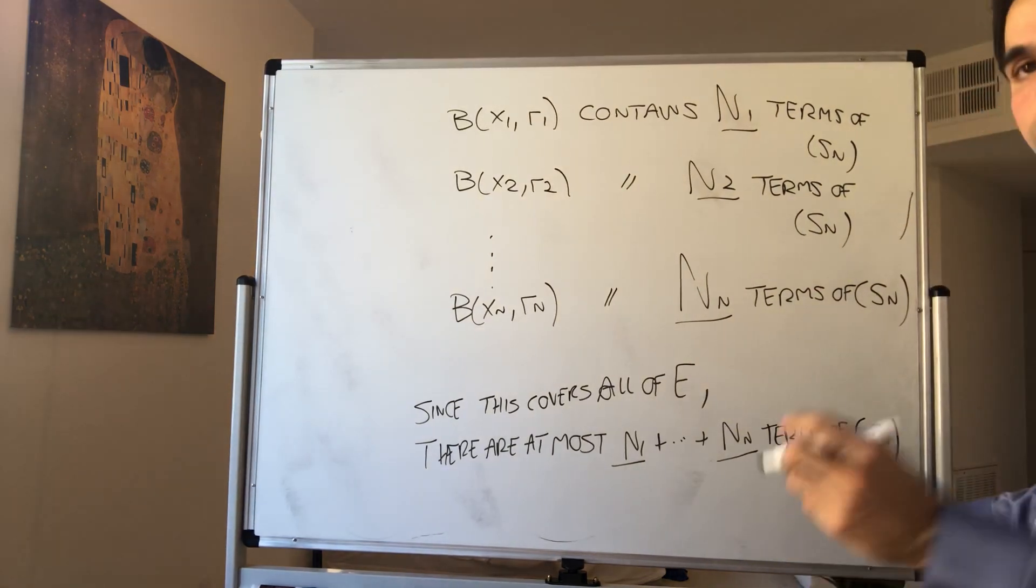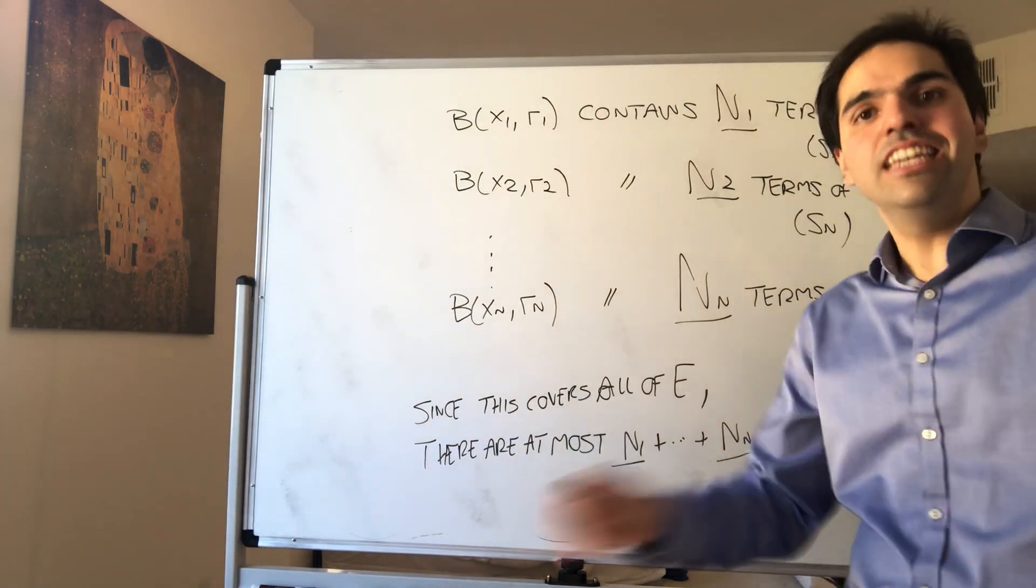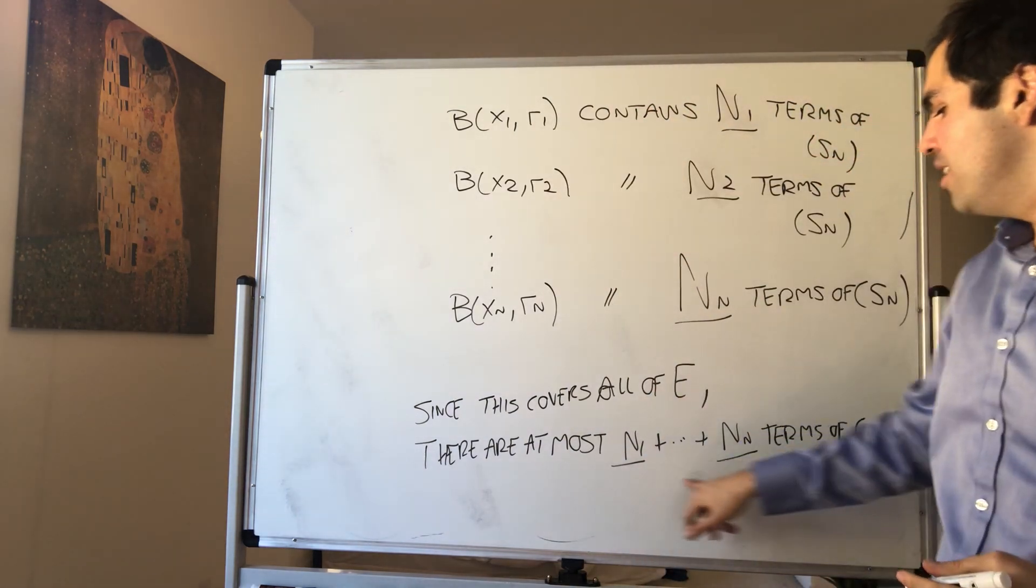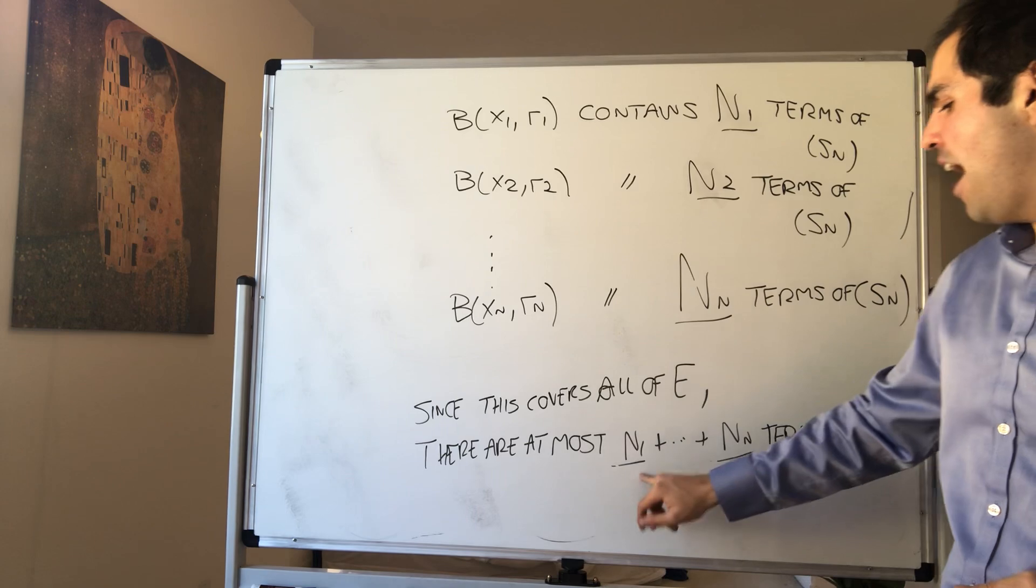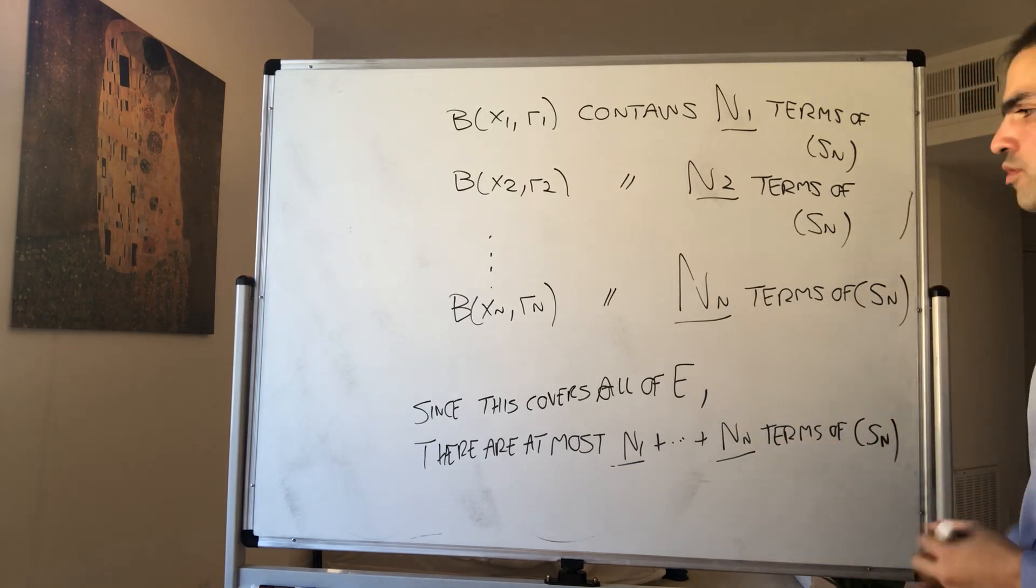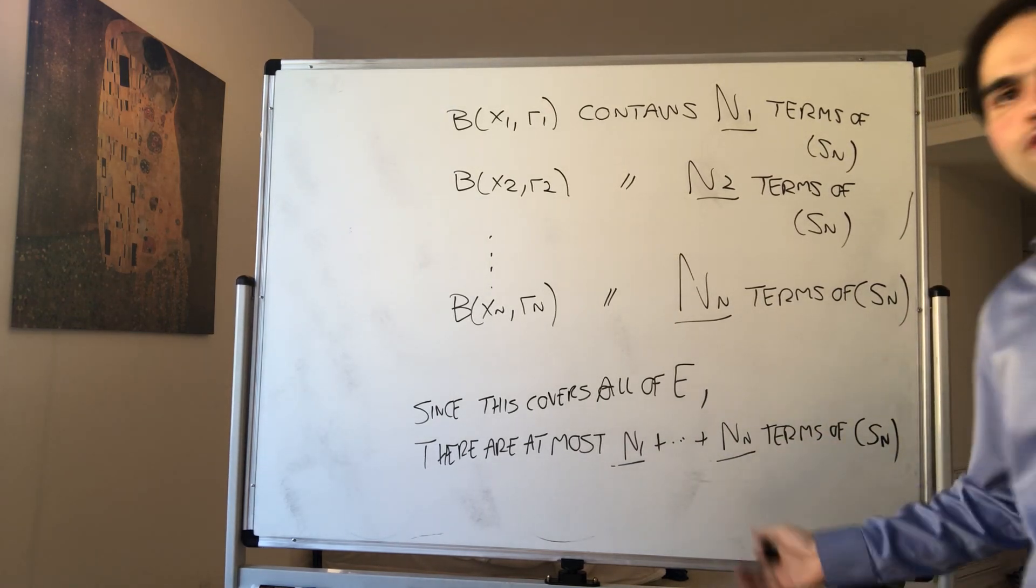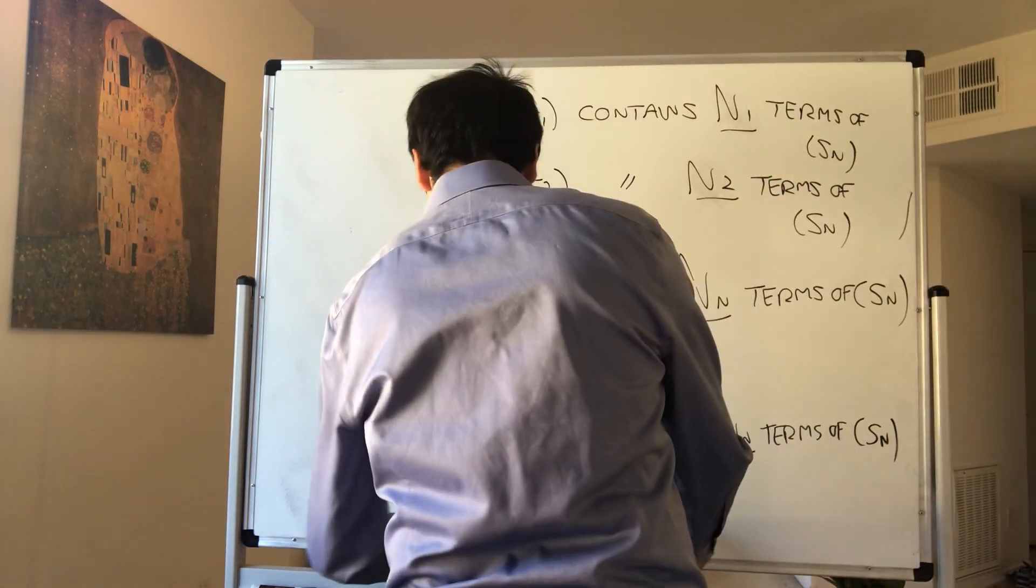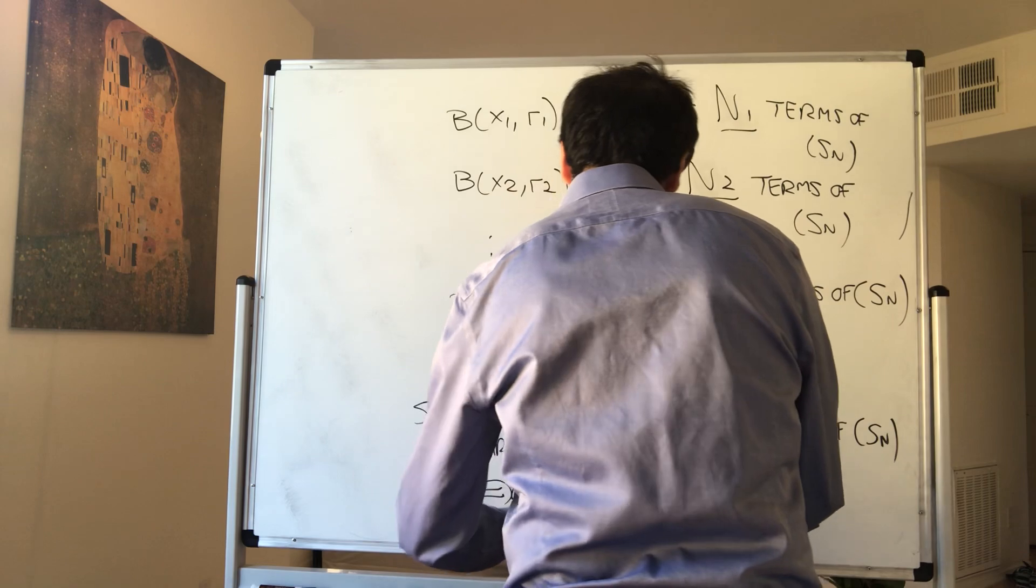Because you see every term of Sn has to be in E, so it has to be in one of those balls. So all the balls, they only contain N1 up to NN terms of your sequence, which contradicts the fact that the sequence is infinite. Contradicts that Sn is infinite.